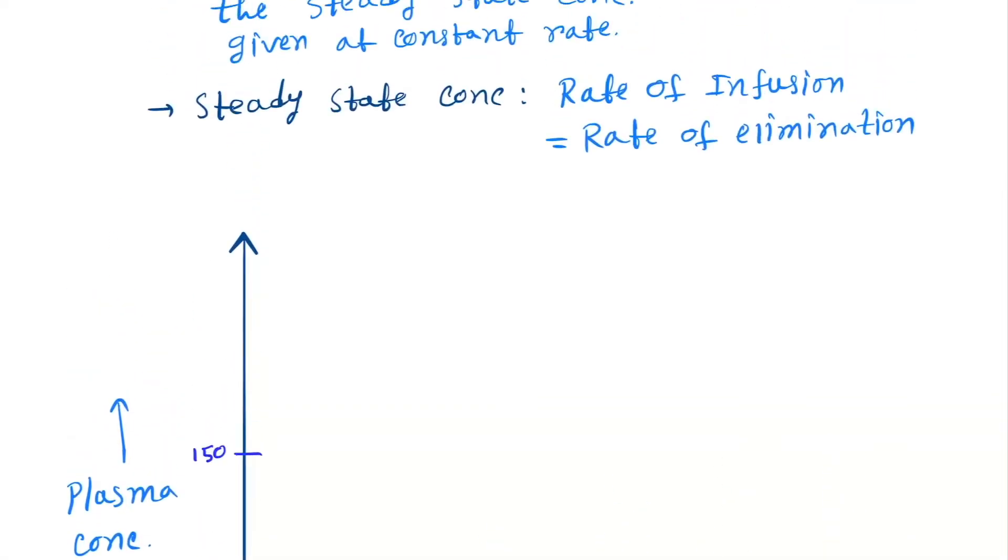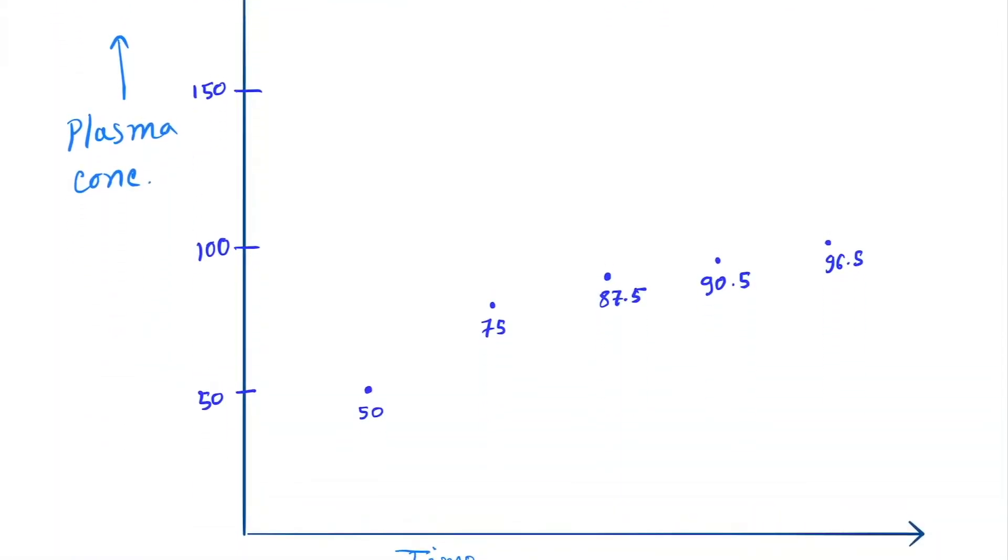Now understand this. Let's take an example where we are giving 100 milligrams of drug at constant rate. Let's see in this graph. First, we have 100 milligrams of drug, then it will become 50 at the first half-life.